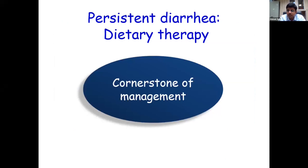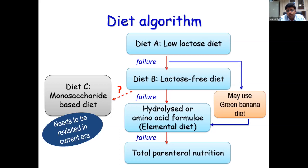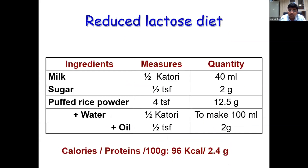In persistent diarrhea, dietary therapy is the cornerstone of management. The dietary algorithm used diet A (low lactose), diet B (lactose-free), and diet C (monosaccharide-based). But now the algorithm has changed — with the introduction of hydrolyzed and amino acid formulas and elemental diet, diet C has been removed. A green banana diet can also be used as a bypass option in these patients.